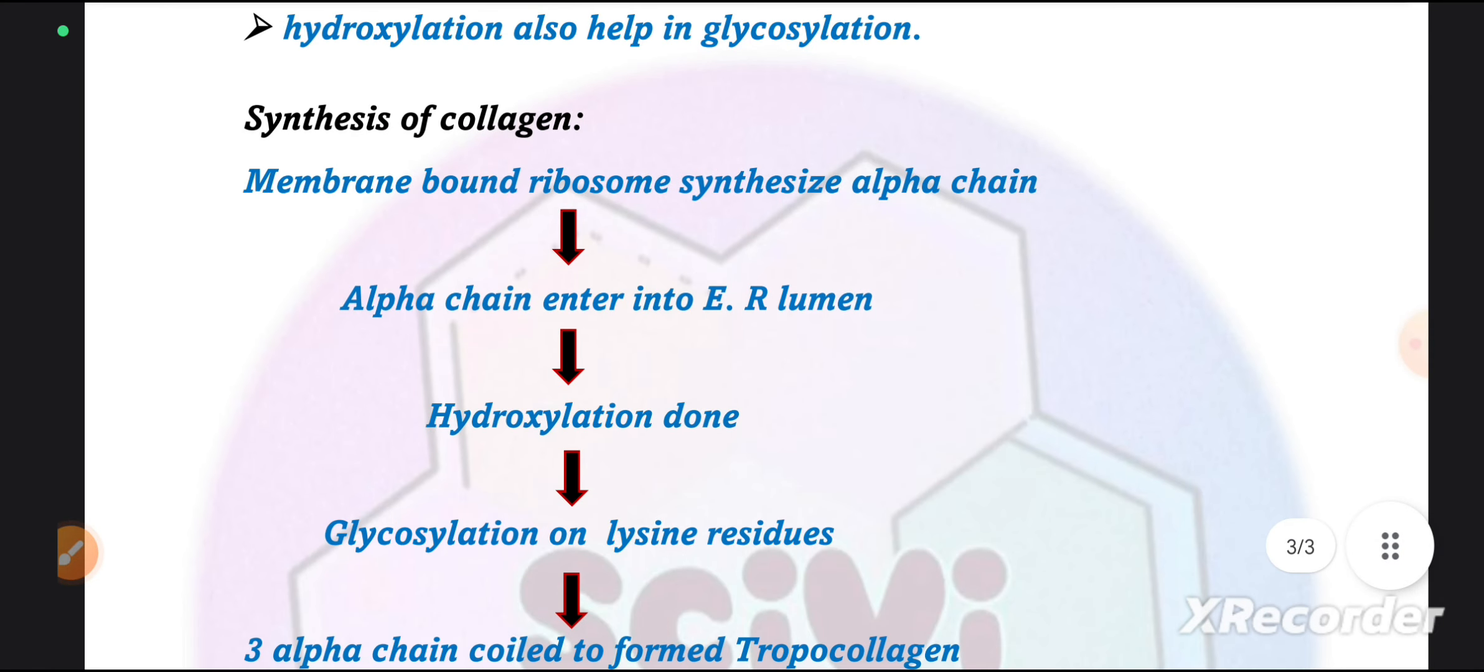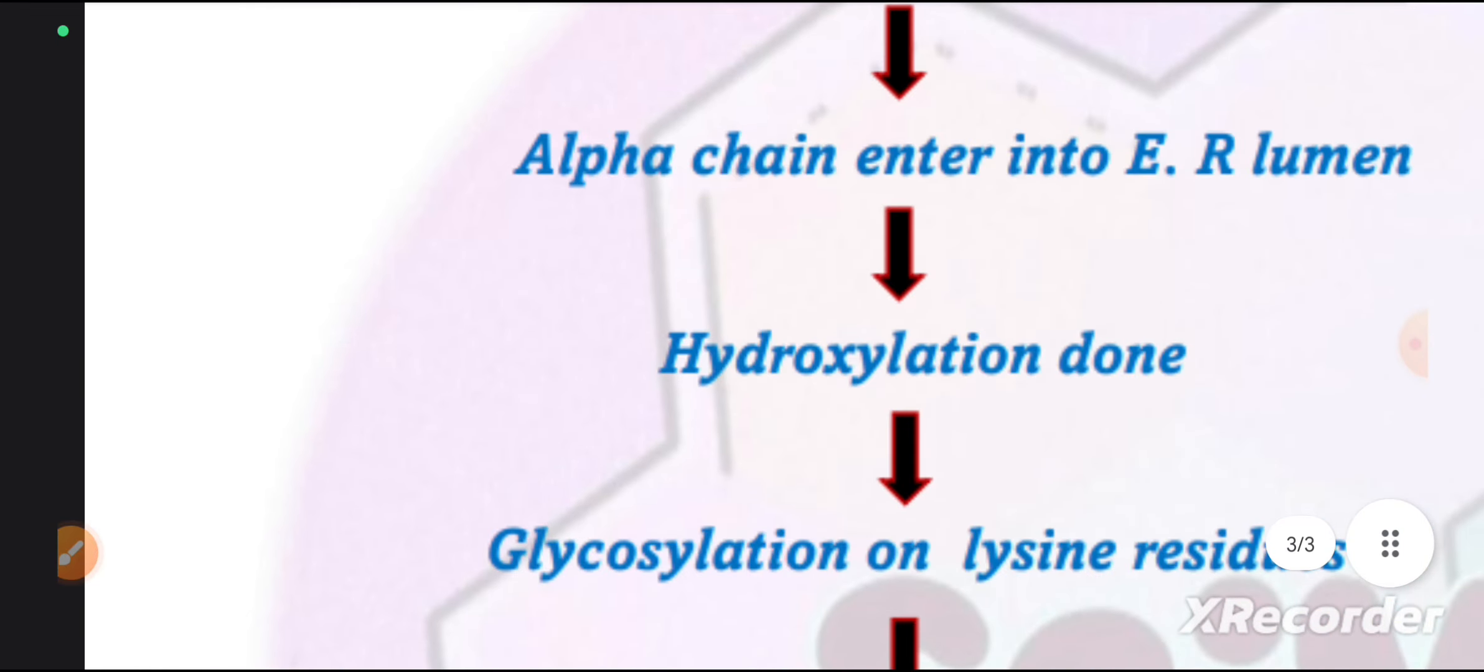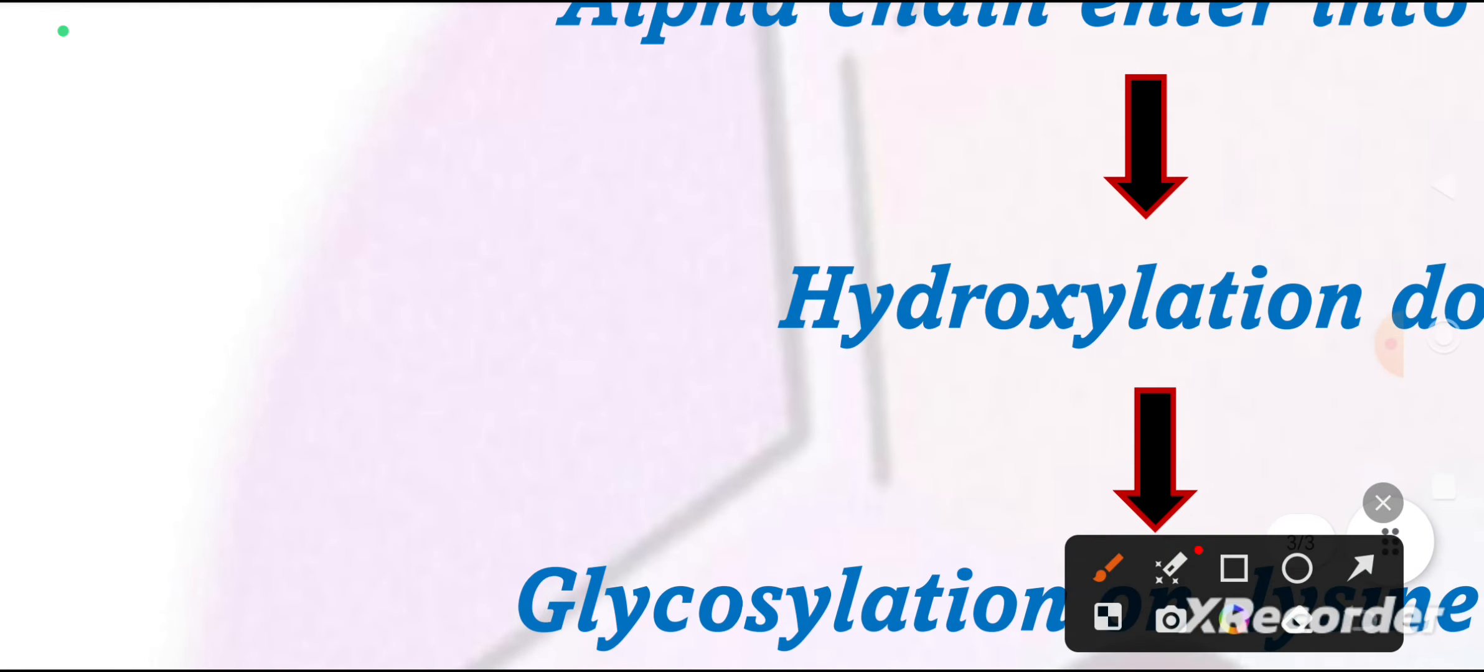If you look at the summary of how collagen will synthesize, where is the collagen synthesis? The collagen is synthesized at the membrane bound ribosome. The collagen is made up of 3 alpha chains. So the alpha chains will enter into the ER lumen. What will it do?